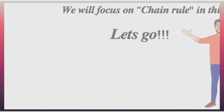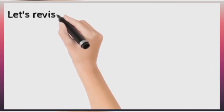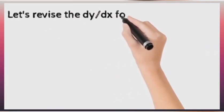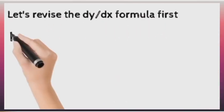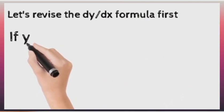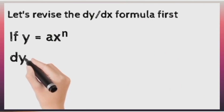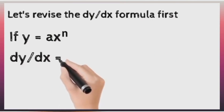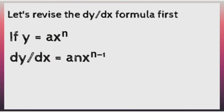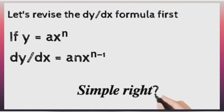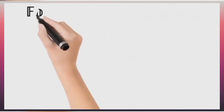It would be very important for us to revise the formula for differentiation first. Let's take for example if you have y equals ax raised to power n. Then dy/dx will give us anx raised to power n minus 1. That is the general formula for it. And for the formula for the chain rule which is a method under calculus,